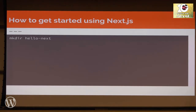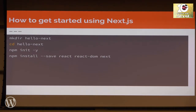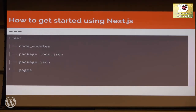So how do you get started with Next.js? Pretty basic. We're gonna create a directory called Hello Next, cd into the directory, and initialize an npm package — that will create our package.json. From there, we're gonna install and save react, react-dom, and Next. And we're gonna make a directory called pages. This is where all of our routing is going to be located. Our tree looks like this: we have our package lock, our pages directory, and a node modules directory.